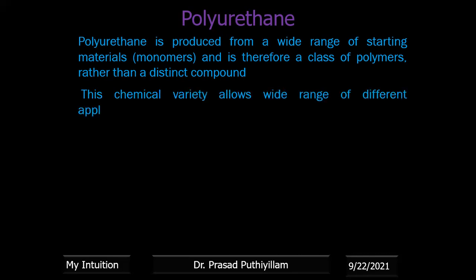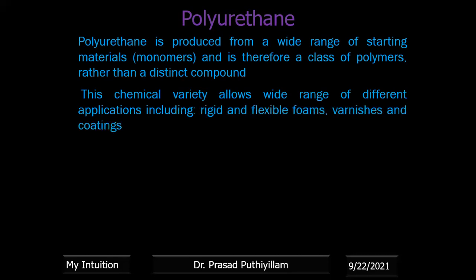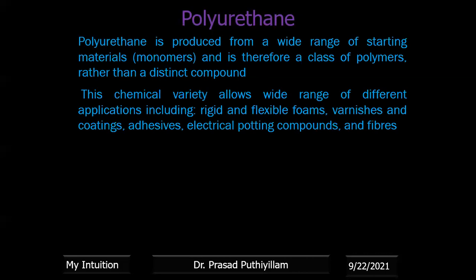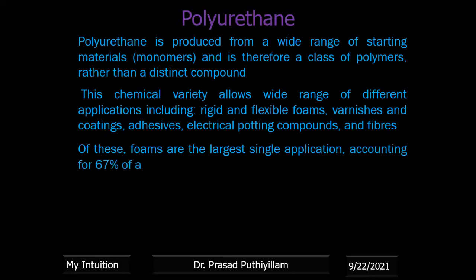The main applications of polyurethane include rigid and flexible foams for cushion applications, varnishes and coatings, electrical potting compounds, and fibers. Foams are the largest single application, accounting for about 67% of all polyurethane produced.